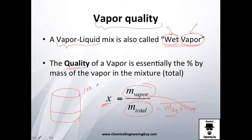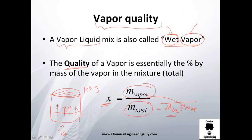For example, say you have 100 grams of mixture in a closed system and you start adding heat. Energy is added, molecules evaporate, and after the experiment you find that the liquid remaining is 57 grams. Let's calculate the quality x of that vapor.